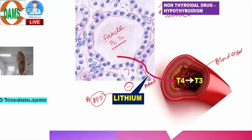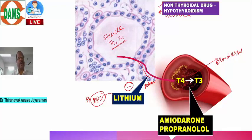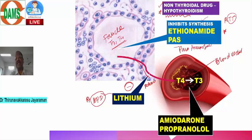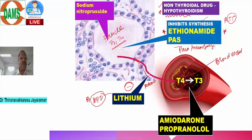In circulation, T4 is converted to T3, and this can be blocked by amiodarone and propranolol as mentioned. Anti-TB drugs can also cause hypothyroidism by inhibiting synthesis of T3 and T4. For exam purposes: the anti-TB drugs that cause hypothyroidism are ethionamide and PAS (para-aminosalicylate). Among these, ethionamide is the most important drug causing maximal hypothyroidism.